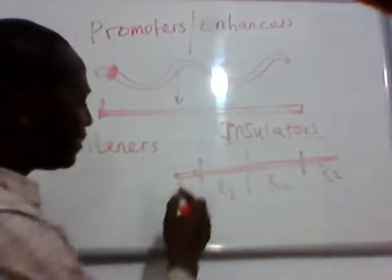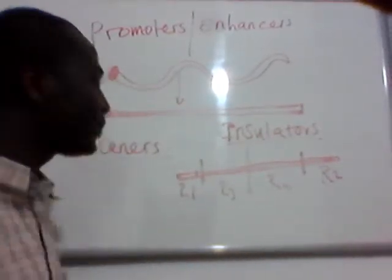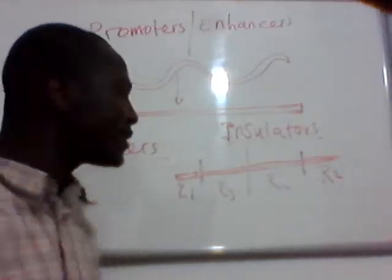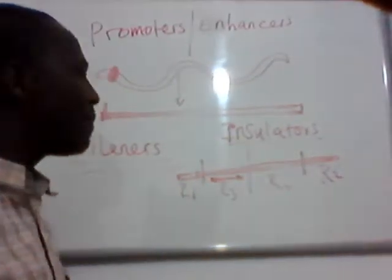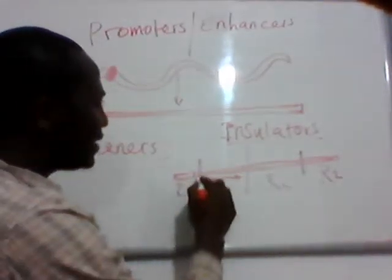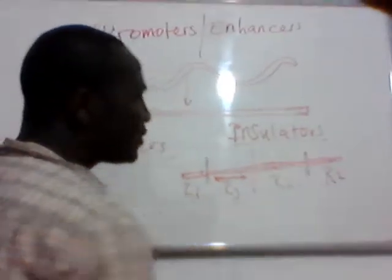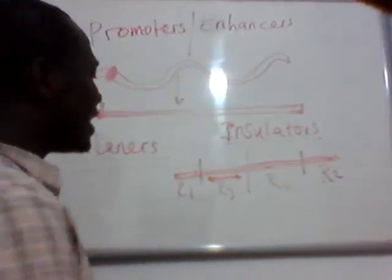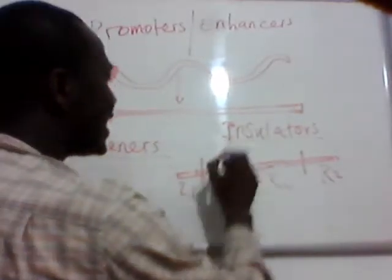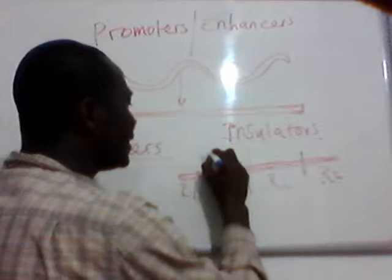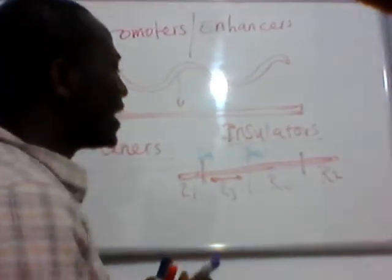When you have these kinds of genes with different segments or regions, but you only want to transcribe just this one region — what is going to happen is you must have something to prevent the other regions from also being transcribed. The insulators will come and bind here, and here, and here, so that those regions will not be transcribed.